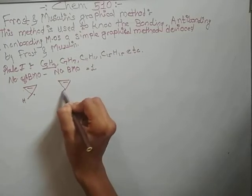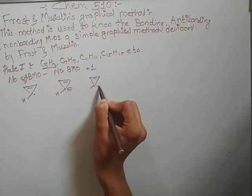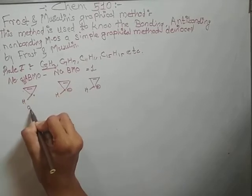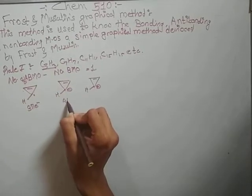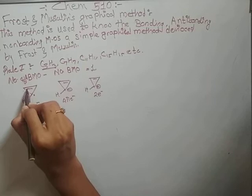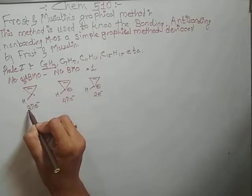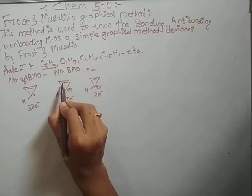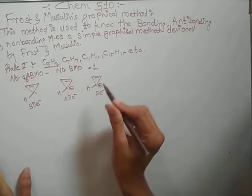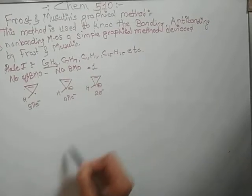For C3H3: cyclopropylene radical has 3 pi electrons, cyclopropylene anion has 4 pi electrons (2 from double bond + 2 from anion), and cyclopropylene cation has 2 pi electrons. The cation has no additional pi electrons beyond the double bond's 2 pi electrons.